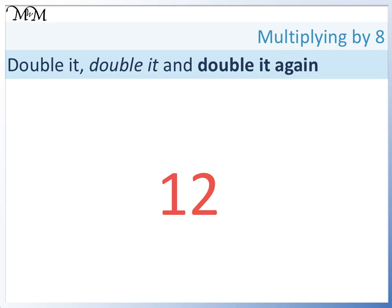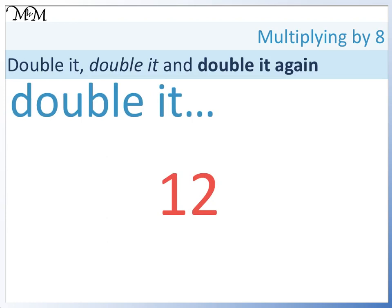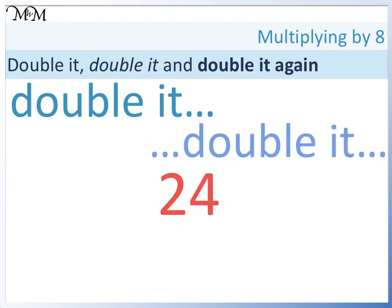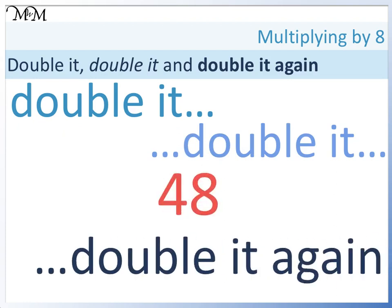What is 12 times 8? You may know this from your times tables. Double it equals 24. Double it equals 48. Double it again equals 96.